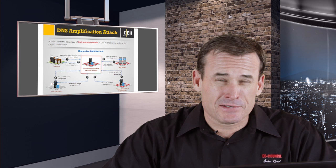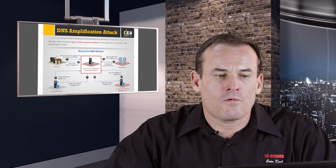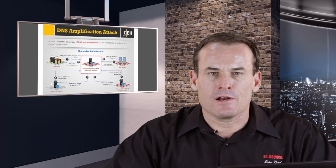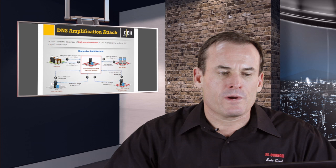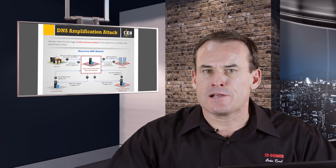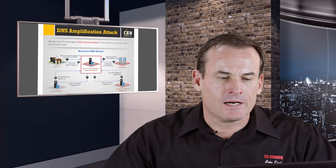Amplification attacks: we talked about DNS amplification attacks in our denial of service module. In general, an amplification attack is a situation where we send a request of a certain size and get a much larger response back. The recursion method performs a DNS amplification attack by requesting zone file information from DNS servers, spoofing the source address, and getting a zone file or cache file back to the clients.